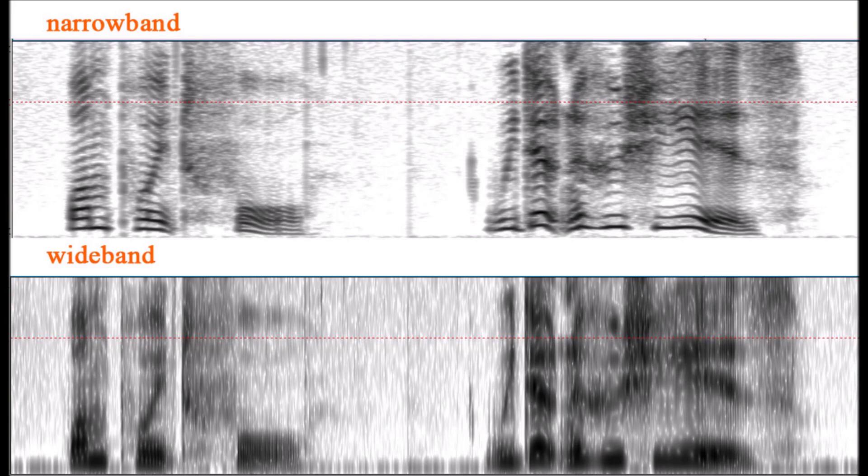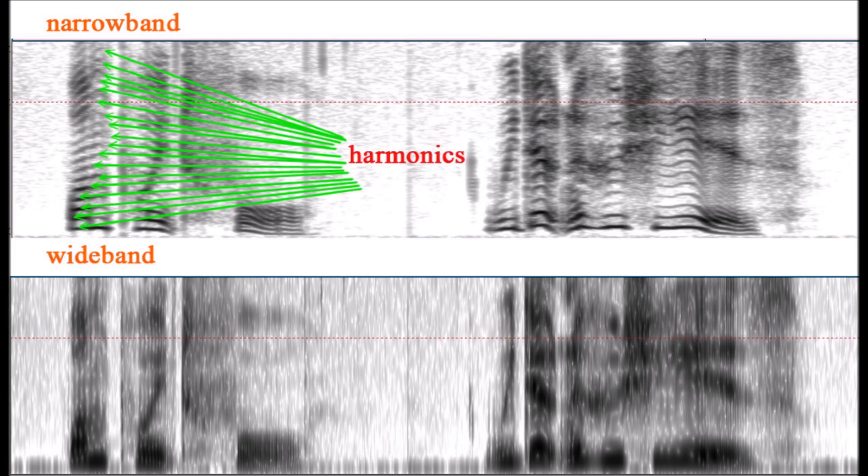The image you see on top is a narrowband spectrogram, which is a type used in speech recognition. Narrowband spectrograms have a very good frequency resolution, which allows you to see these lines called harmonics. Harmonics are very useful to figure out the intonation of an utterance, but you do not really need them, and in fact they may complicate things if you're trying to figure out individual segments.